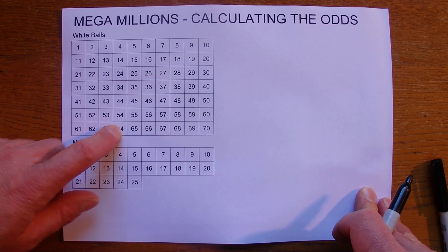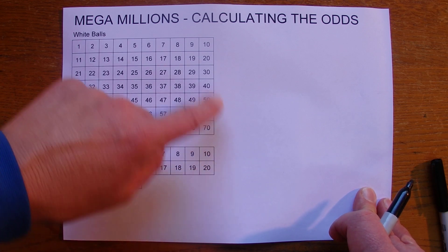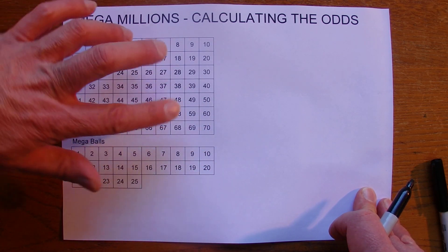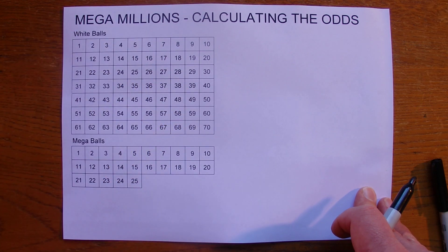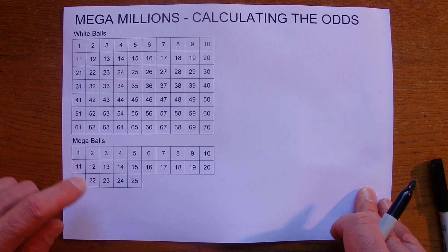So in the top section there's 70 numbers that you can select from and you must select five numbers in the top section, five winning numbers, to win the first prize.